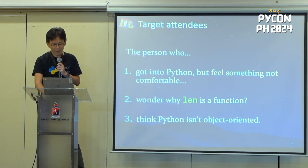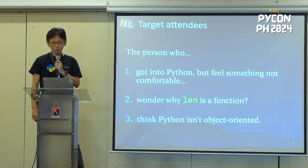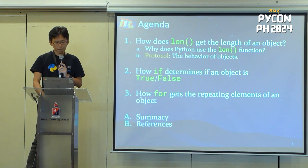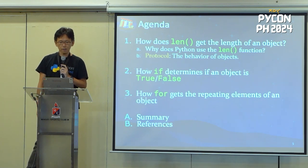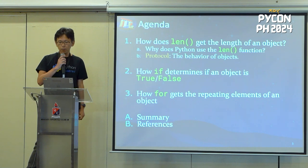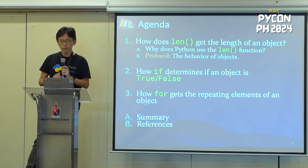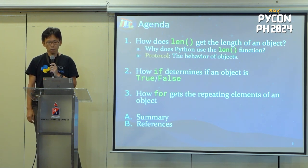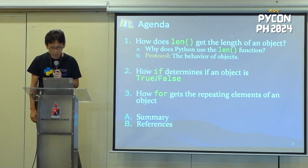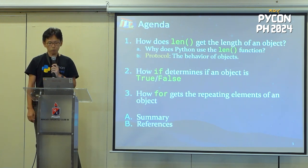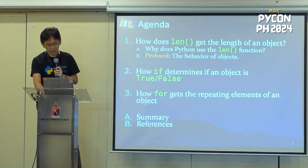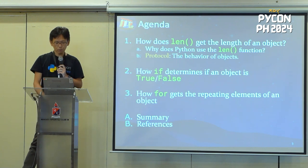If you have these questions, you are right there. This material is designed for those looking to move from beginner to intermediate level in Python. Here's the agenda: there are three parts. The first — how does the len function get the length of an object — is the most important part. The second introduces a slightly different example based on the first. The third is a bit more complex and I will skip today due to limited time. I hope you will refer to the slides later. Finally, there will be a summary and a reference. Let's move on to Part One.